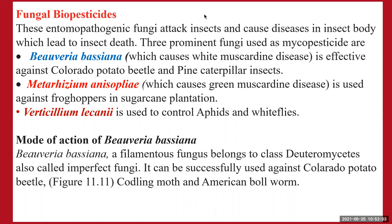Fungal biopesticides are entomopathogenic fungi — fungi which attack insect pests, cause diseases in the insect's body, and lead to the death of the insect. There are three prominent fungi used as fungal biopesticides: Beauveria bassiana, effective against the Colorado potato beetle and pine caterpillar; Metarhizium anisopliae, used against froghopper insects in sugarcane production; and Verticillium lecanii, used to control aphids and whiteflies.